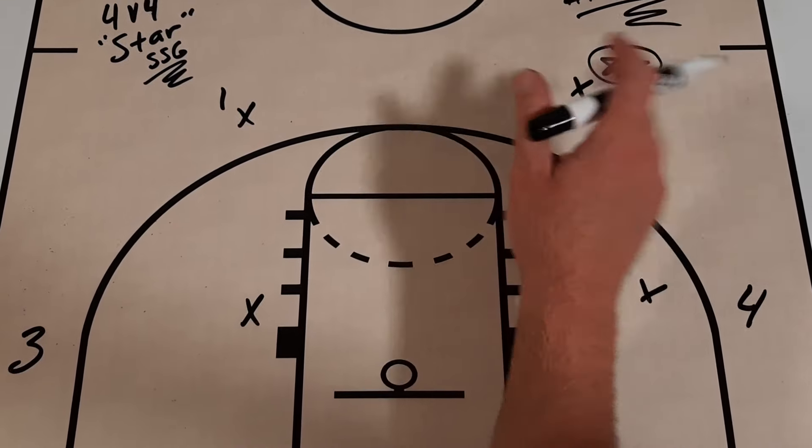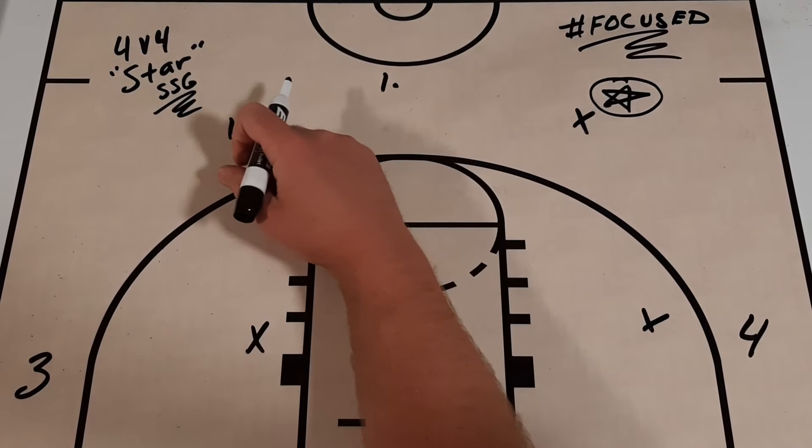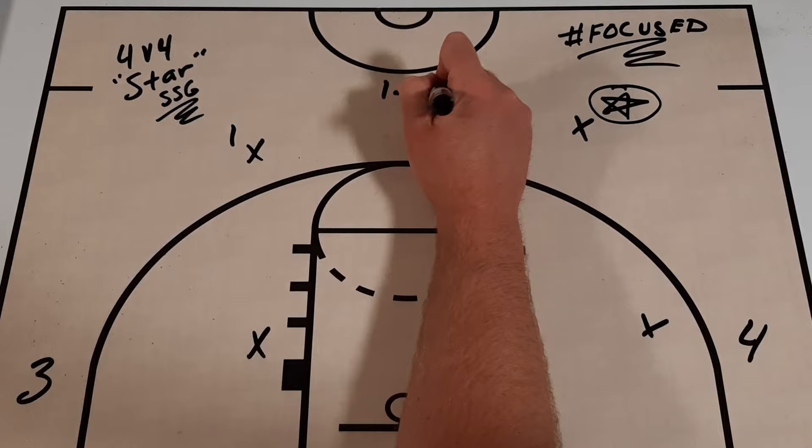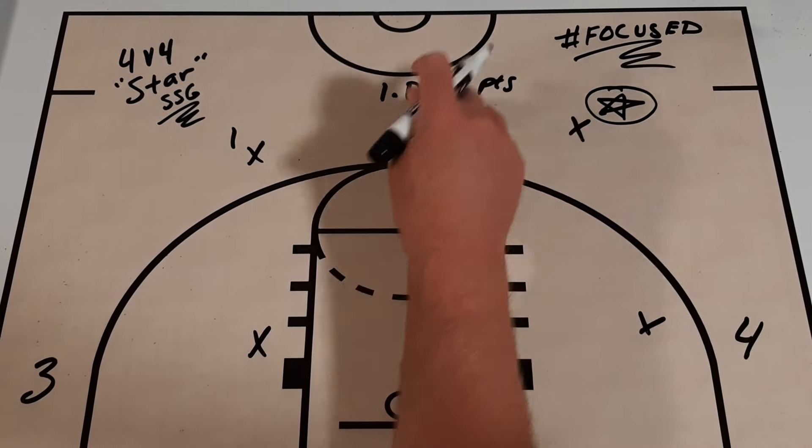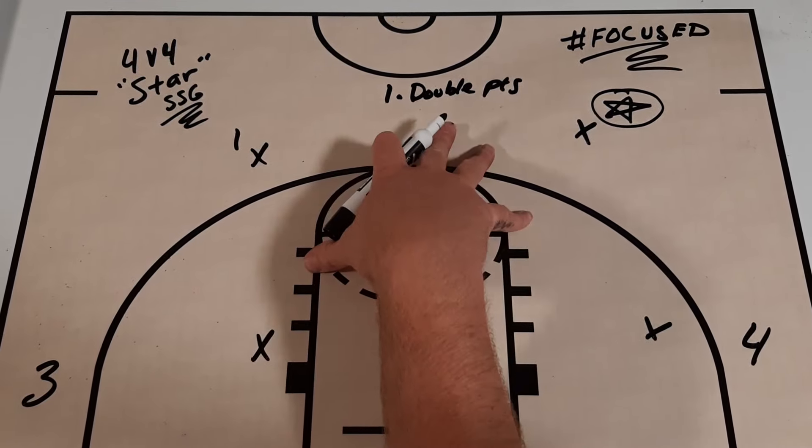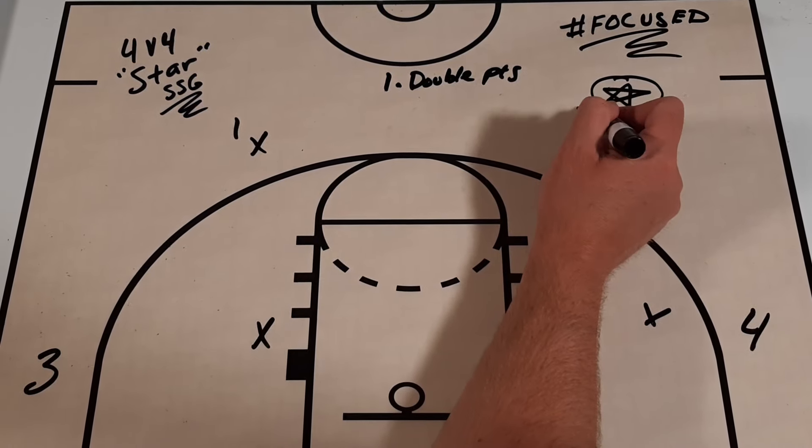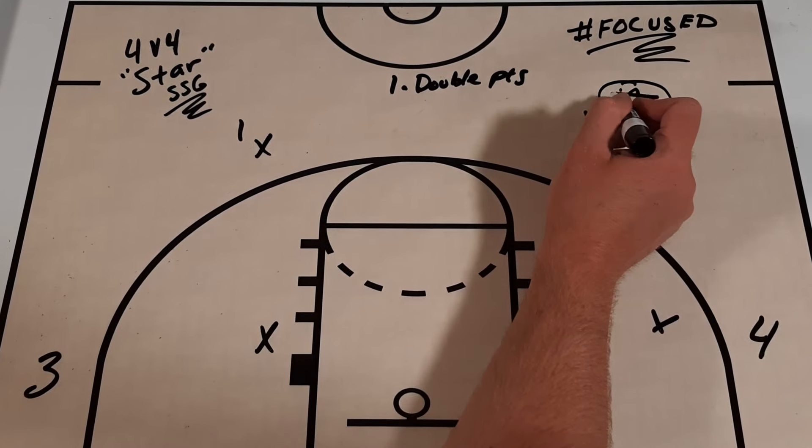There's different ways to play it. The first way you can play it is whenever this player scores, they get double points. You could go back and forth. If the defense gets a stop, they get to go on offense. They might get a point for a stop, and then they go on offense.